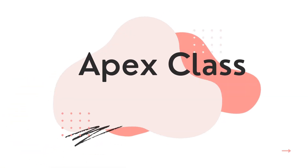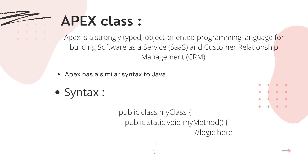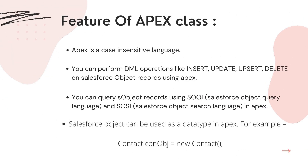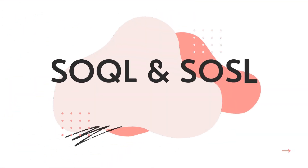The third topic is Apex class. Apex is a strongly typed, object-oriented language developed by Salesforce for building Software as a Service applications. Apex is case-sensitive, and in Apex you can perform DML operations and also run SOQL and SOSL queries to find records from your Salesforce organization or database.